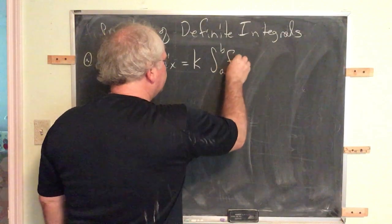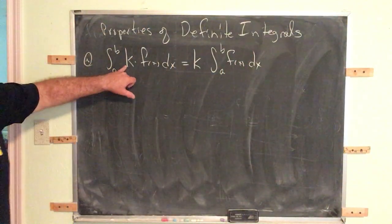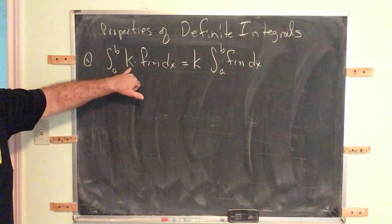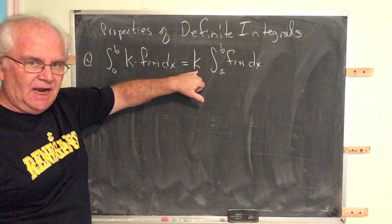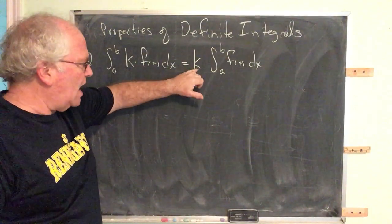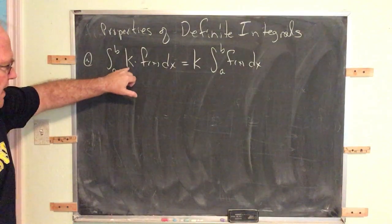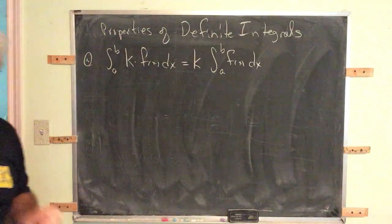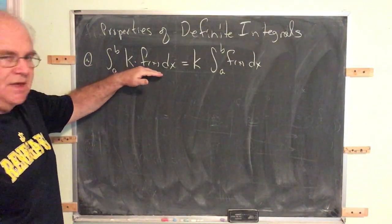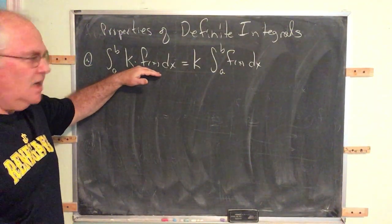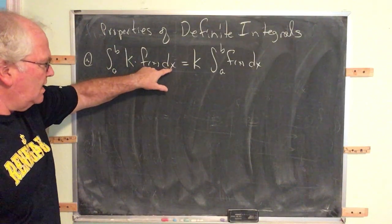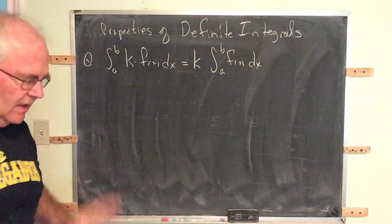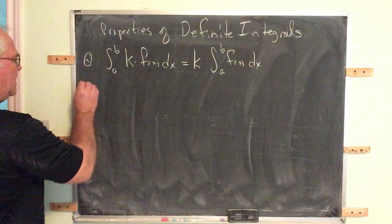Constant multipliers multiply along. If you have a constant multiplier inside the integral, you may, if it's more convenient, move it outside the integral. If you have a constant that's outside the integral, you may, if it's more convenient, put it inside the integrand. You may freely move constants. You may not do this with variables — if you have the variable of integration, you may not move an x freely in and out. That's not the same property.